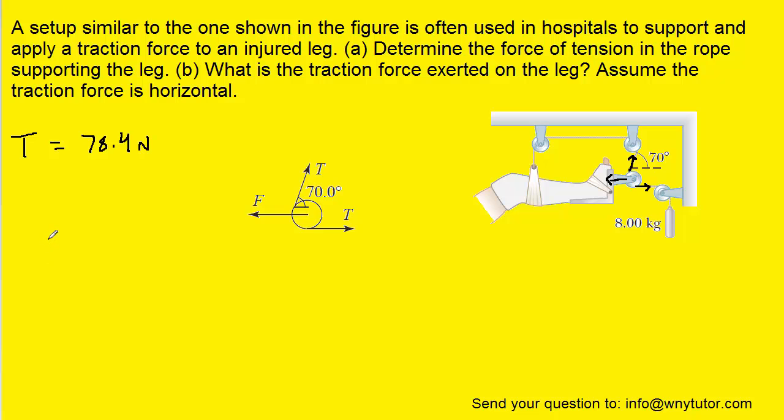We can once again use the sum of the forces equaling zero, since the pulley is not accelerating, but this time we're looking at the forces in the x direction rather than the y direction like we did in part A. We can see from the diagram that the tension that's pointing up and to the right has an x component pointing to the right. And that x component, because it's adjacent to the 70 degree angle, is going to be T times the cosine of 70.